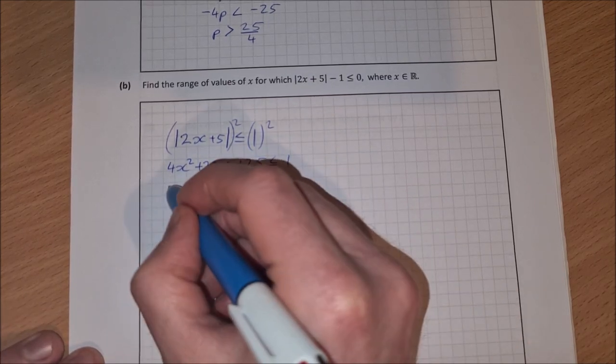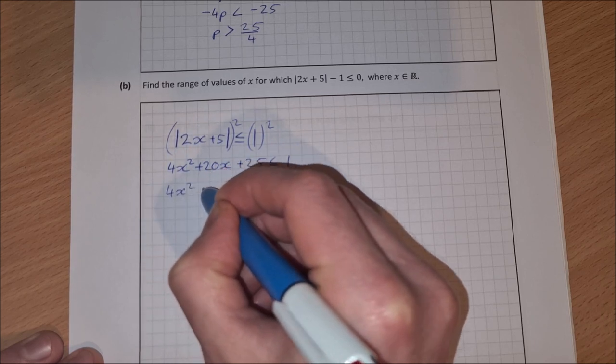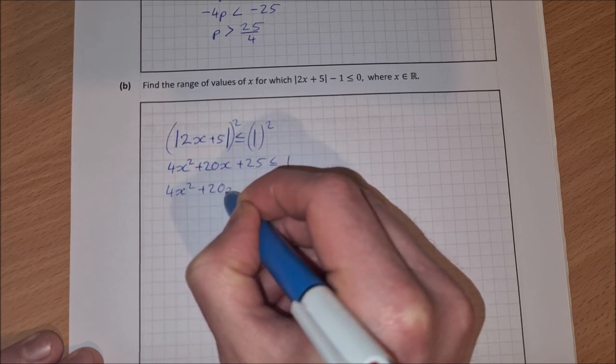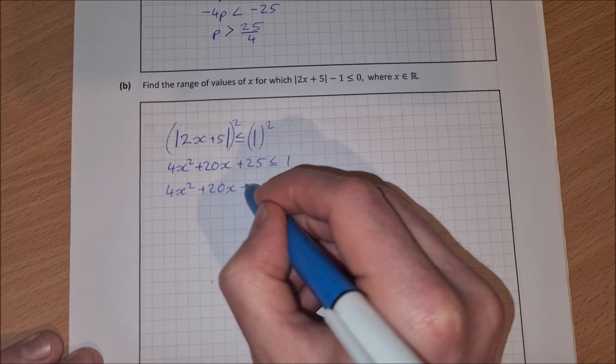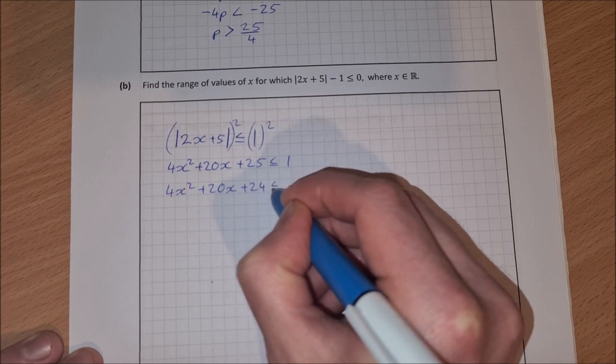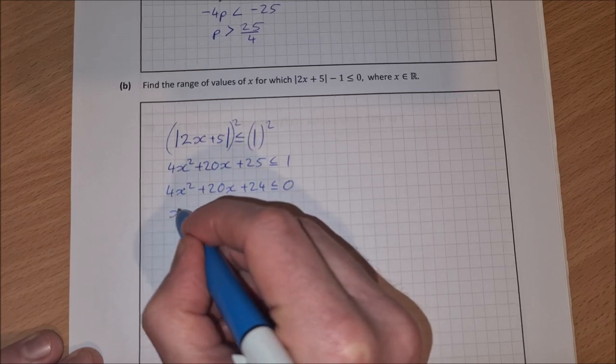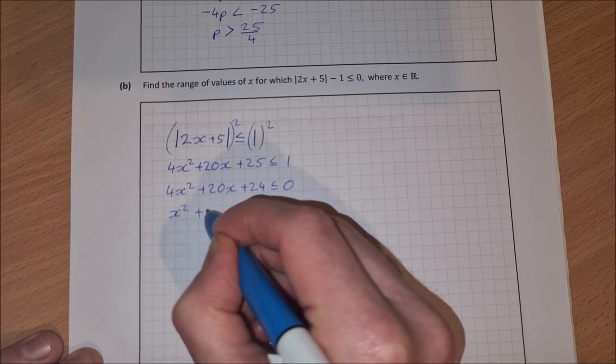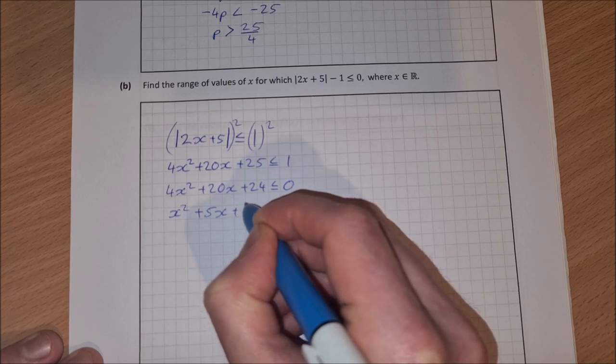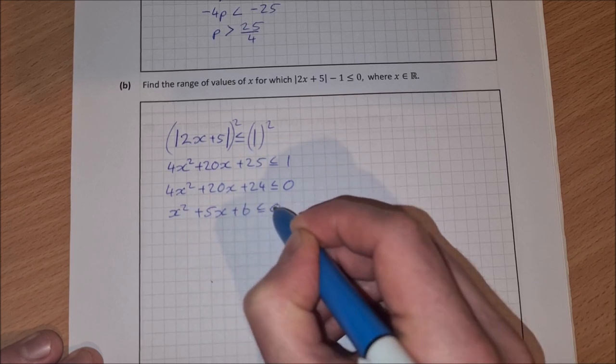So then let's get everything to one side. So take 1 from both sides, 4x squared plus 20x, 25 minus 1 is plus 24 is less than or equal to 0. I can divide across by 4 to make it simpler.